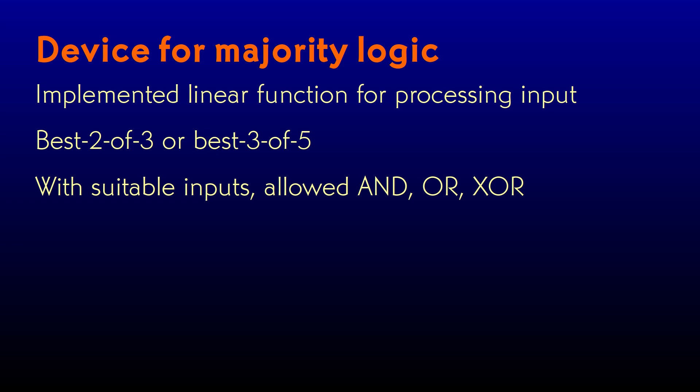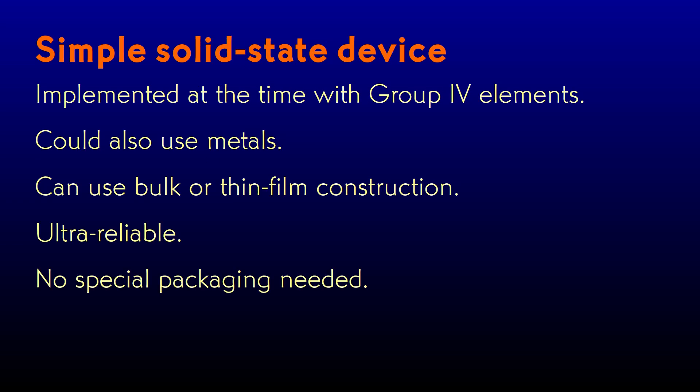The Linatron implemented the linear input function, so its output could drive a simple comparator or threshold amplifier to give the logic output. By proper assignment of the inputs, it could implement AND, OR, or exclusive OR operations. It was an extremely simple solid-state device, built at the time almost exclusively of Route 4 elements. More modern variants can include metals in the device, and it could be included in integrated circuits using either bulk or thin-film construction.